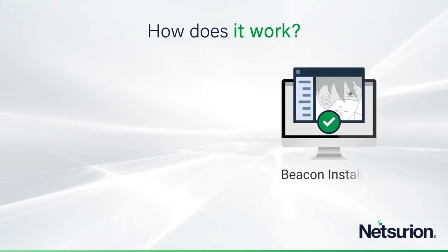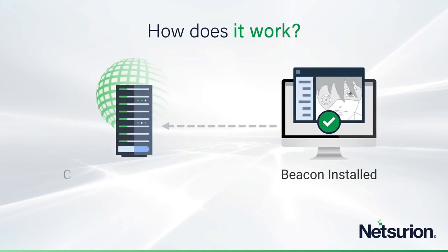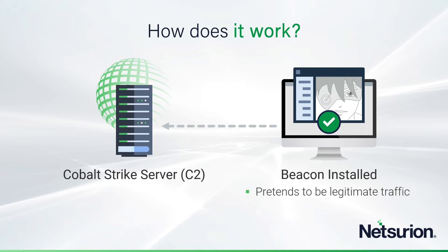Once the beacon is installed, it will phone home to the Cobalt Strike server. This is the command and control — CNC or C2 — server. It can be very sneaky indeed. It will pretend to be legitimate traffic. It'll be asynchronous, low volume, and difficult to detect. It even has the ability to masquerade as some other piece of malware, so even though it itself is Cobalt Strike, it can look like something else. Ultimately, it will operate under the direction of the command and control server.